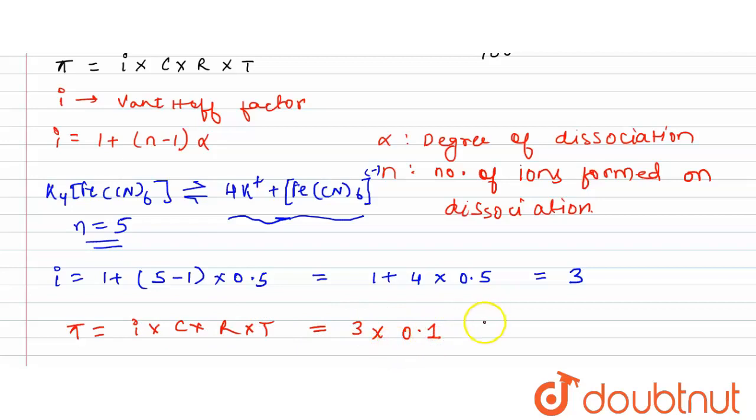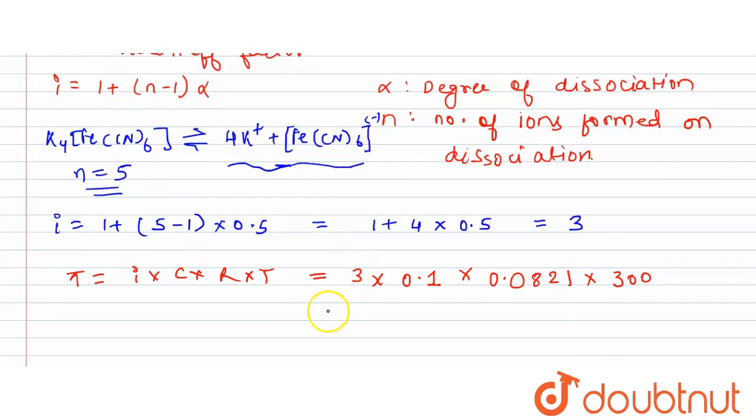And the value of gas constant, if you take it in terms of litre atmosphere, then it will be 0.0821. If you take it in terms of litre atmosphere, because the osmotic pressure needs to be in atmosphere unit, so that is why we are taking it as 0.0821 times 300 is the temperature. So from here you will get the value of osmotic pressure as 7.389 atm.